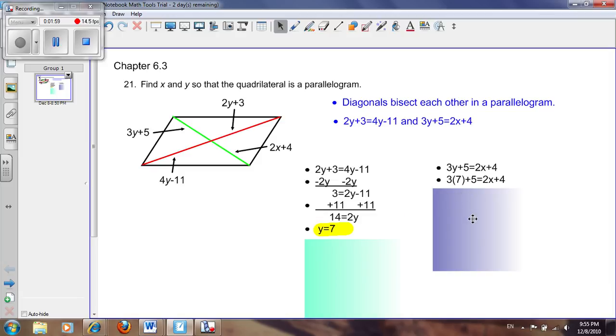Since 3 times 7 equals 21 and 21 plus 5 is 26, we get 26 equals 2x plus 4. Again, we put the integers on one side and variables on the other. We subtract 4 from both sides and get 22 equals 2x. Then we divide by 2 on each side and get x equals 11.